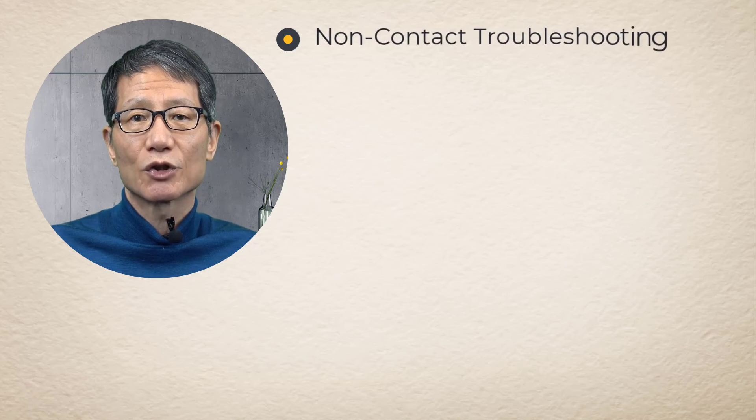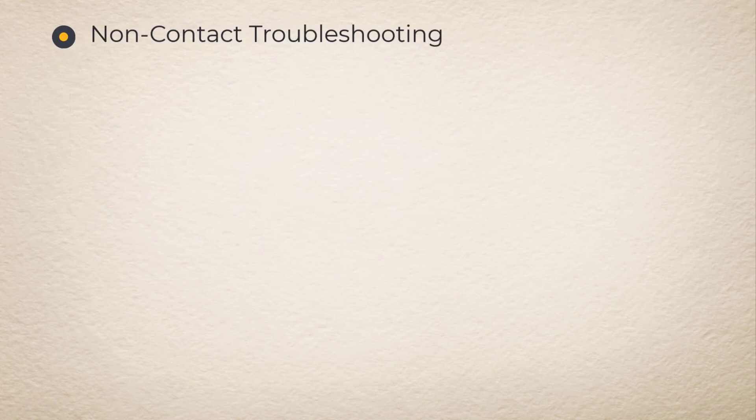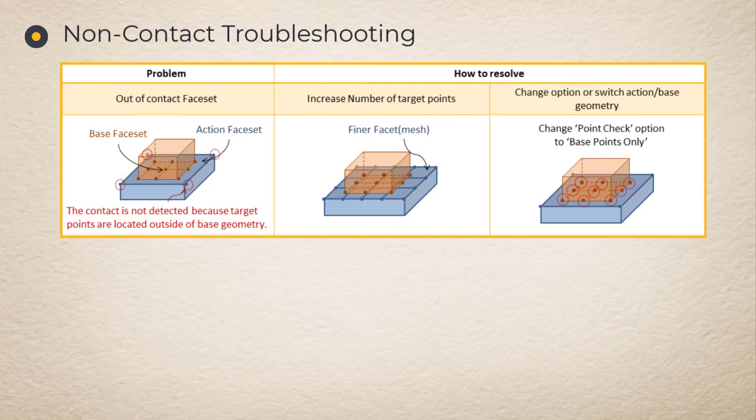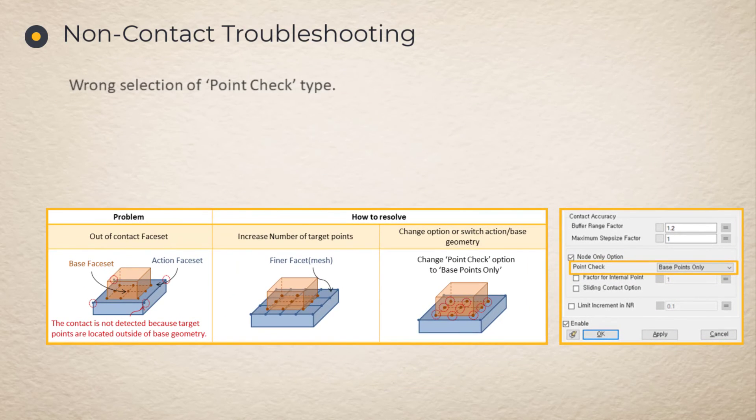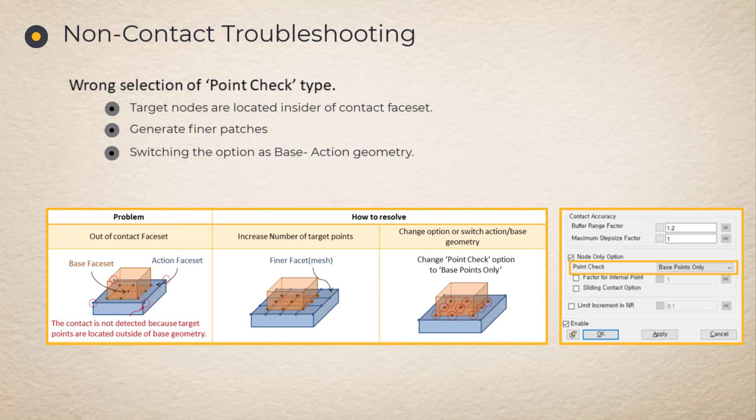Non-contact troubleshooting. It is often observed for a contact pair to pass each other without contacting. This happens when a node does not recognize a surface because the number of the node is very little compared to the large surface area. Internal node option may be used or the number of the patches for both contact bodies must be increased to resolve this problem.